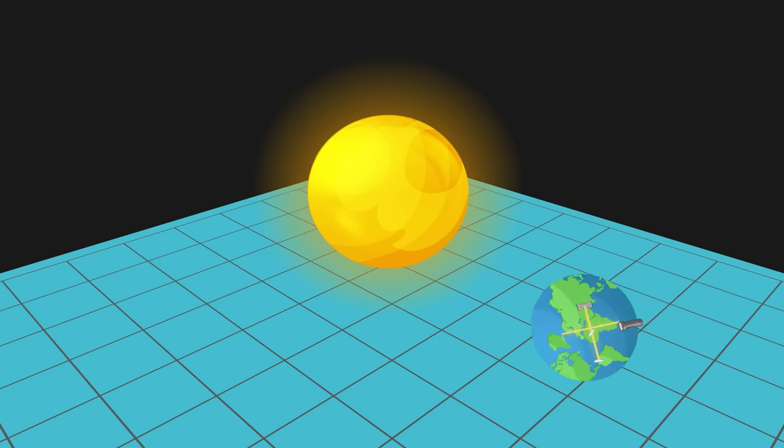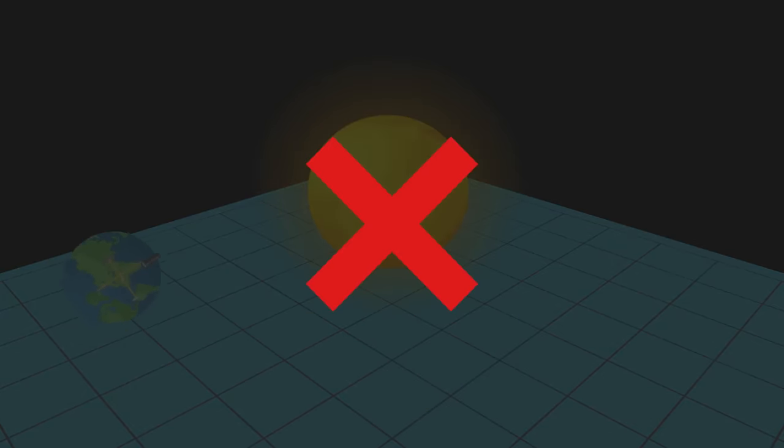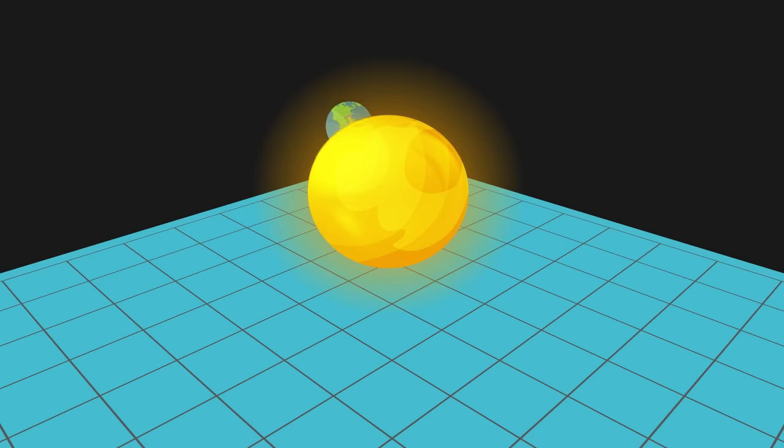But surprisingly, the results of such experiments were all negative. The speed of light doesn't show any difference in any direction, which contradicts with Doppler effect of waves.